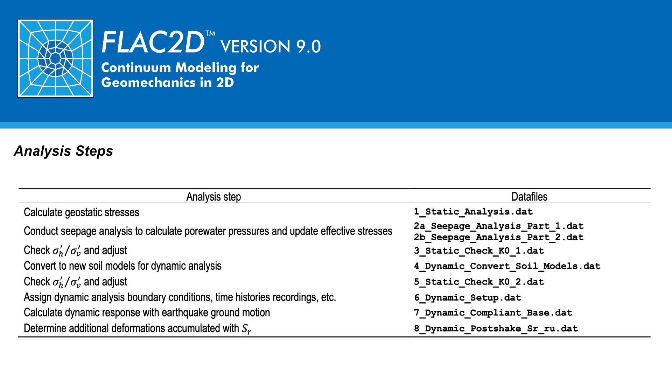With the data stress determined, the third analysis step checks the ratio of the horizontal to vertical effective stresses and attempts to adjust if unrealistic. Next, starting in the fourth analysis step, the model conditions are transitioned for the dynamic analysis.